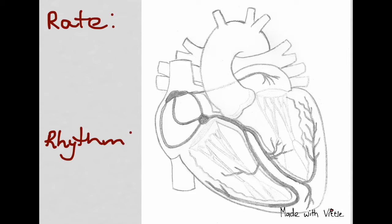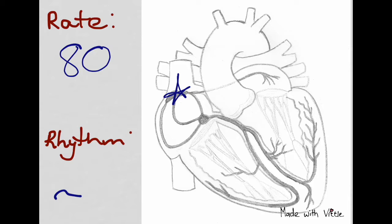Let's look at the conductivity of the heart for a moment. If the heart rate originates in the SA node, it will have an intrinsic rate of 80 and will show a clear and upright P wave on the EKG tracing.